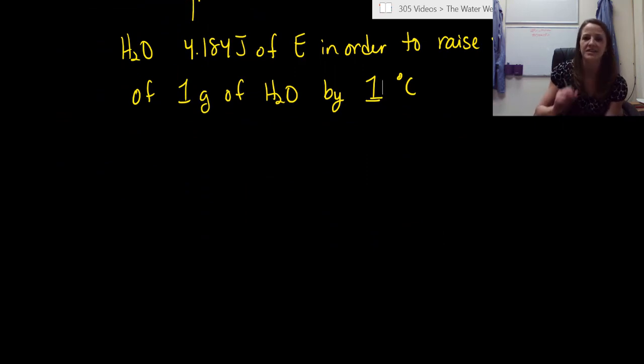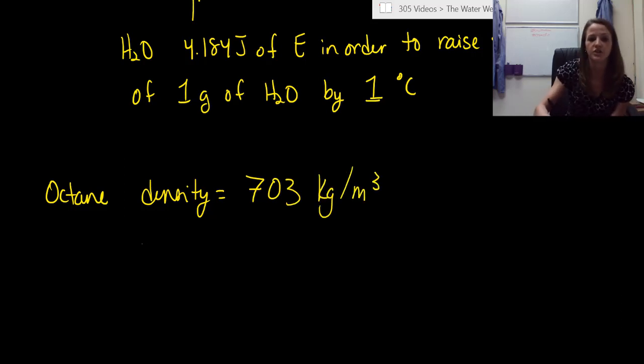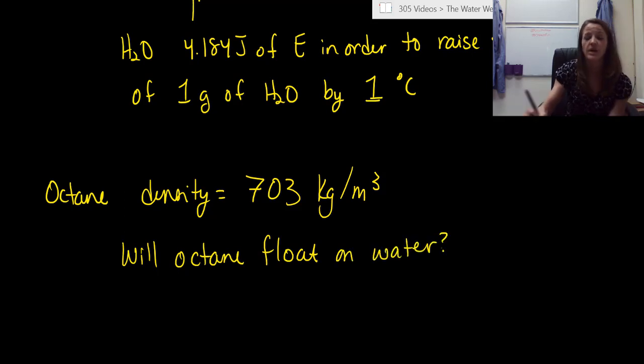Okay. Last thing. Let's practice converting that unit from our centimeters cubed to milliliters. You need to be able to go back and forth between the two of them. So octane has a density equal to 703 kilograms per meters cubed. The question is, will octane float on water? And I'm talking about liquid octane here. So when we put liquid octane in the water, is it going to mix or is it going to float? Go.